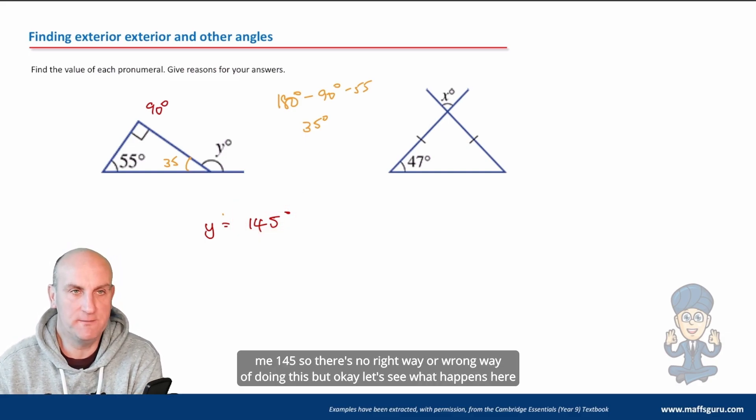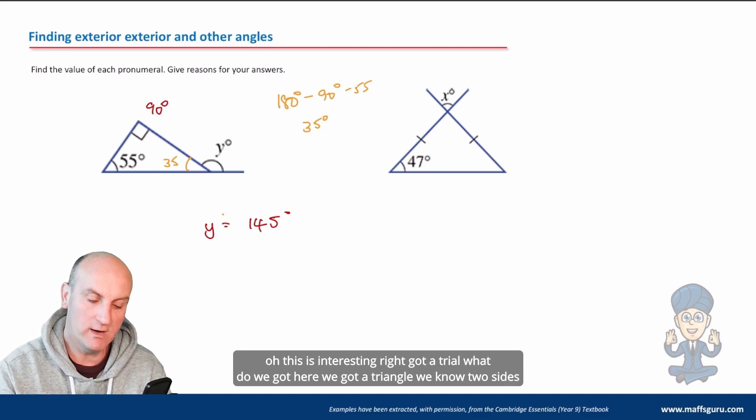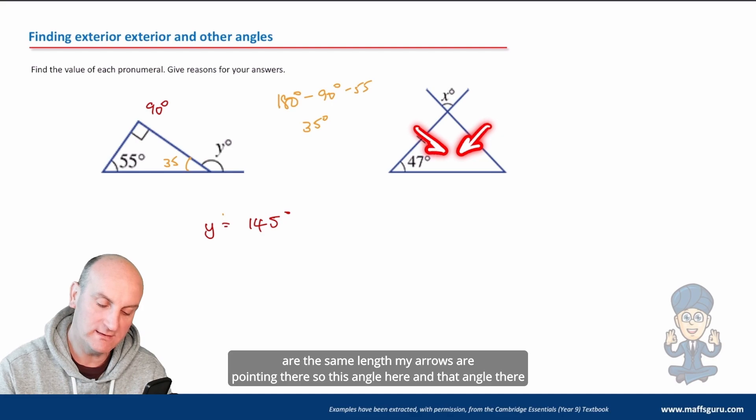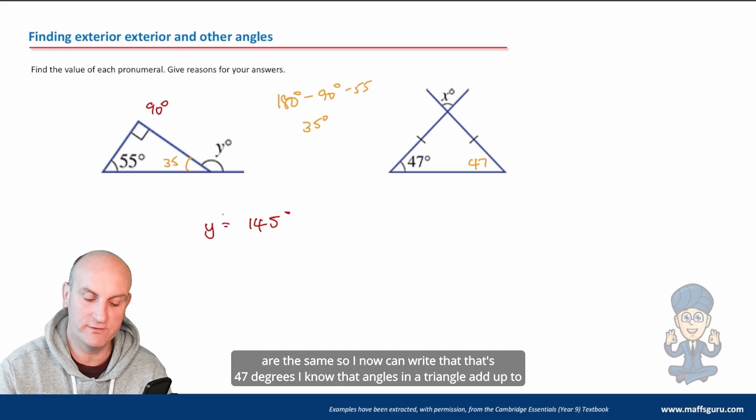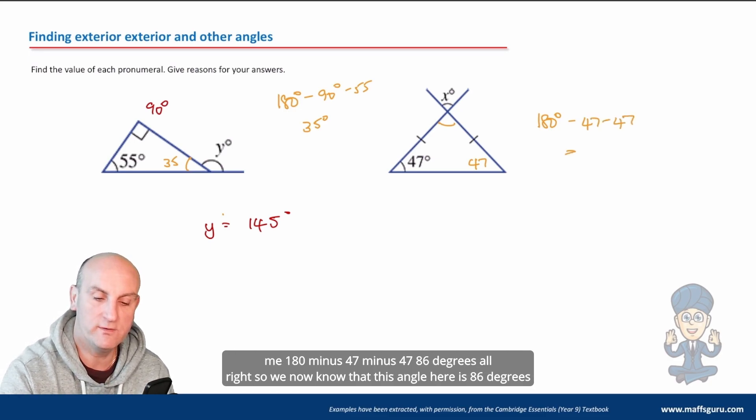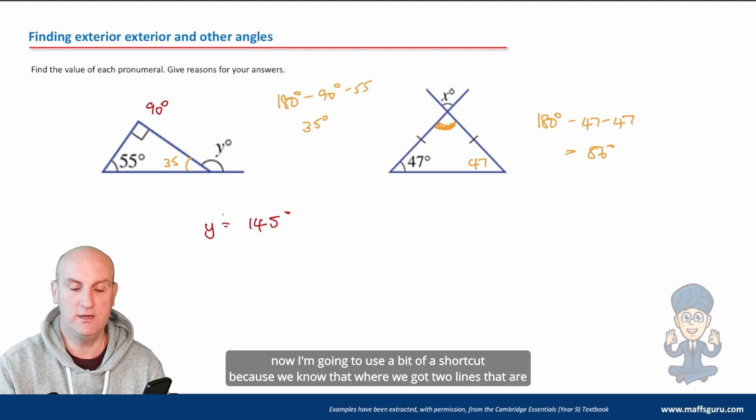Let's see what happens here. This is interesting. We've got a triangle, we know two sides are the same length. My arrows are pointing there, so this angle here and that angle there are the same, so I now can write that that's 47 degrees. I know that angles in a triangle add up to 180 degrees, so I can now find this angle here. If I do 180 minus 47 minus 47, that's going to give me 180 minus 47 minus 47, which is 86 degrees. So we now know that this angle here is 86 degrees.